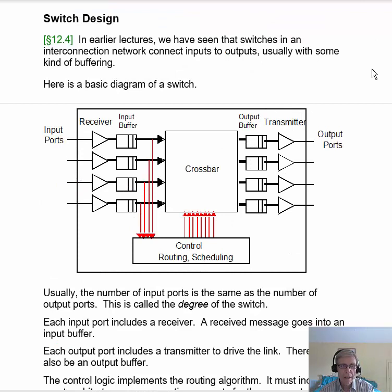Well, switches connect inputs to outputs. There are input ports, and each input port has an input buffer because a message may not be able to be routed as soon as it is received, if there's congestion in the network, for example. And then there are control signals that tell which inputs are routed to which outputs. And then there's an output buffer because a certain amount of the message needs to get there before it can be transmitted.